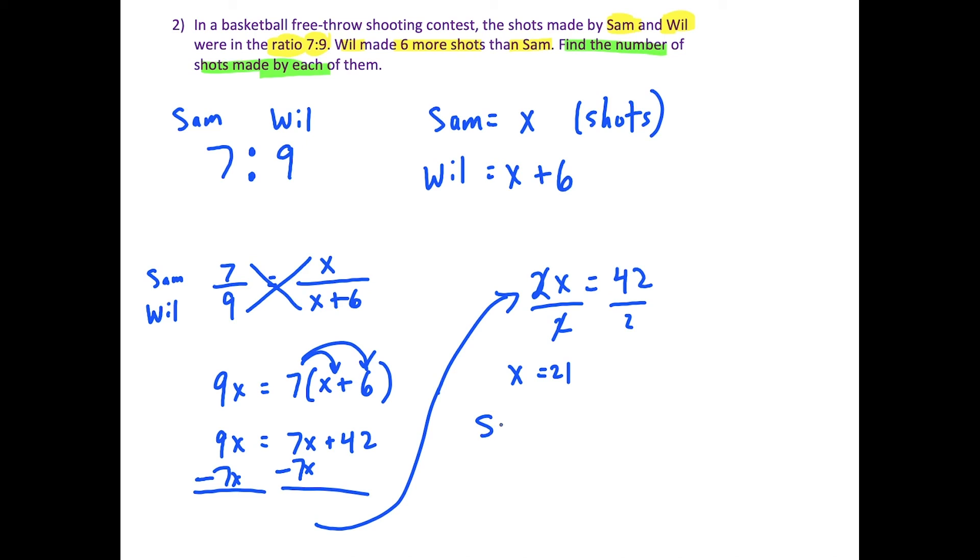So if we write all this out, this tells us that Sam made 21 shots, and Will made 6 more than that, and 21 plus 6 is 27.